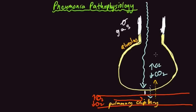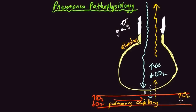You then breathe out, taking the CO2 out the way the air came in. The blood that is now moving on to the left side of your heart, where it can be sent out to your cells, is comparatively higher in O2 and lower in CO2 than it was at the pulmonary capillary.